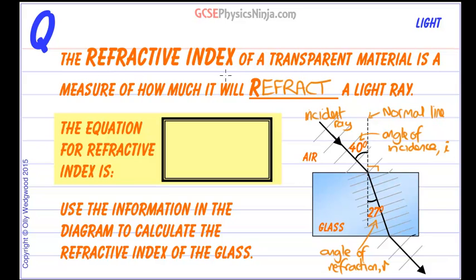Now what the refractive index is telling us is how fast these waves are travelling in air or a vacuum compared to how fast they're travelling in a different material such as glass. They'll be slower in glass than they are in air, so the refractive index will be greater than one.